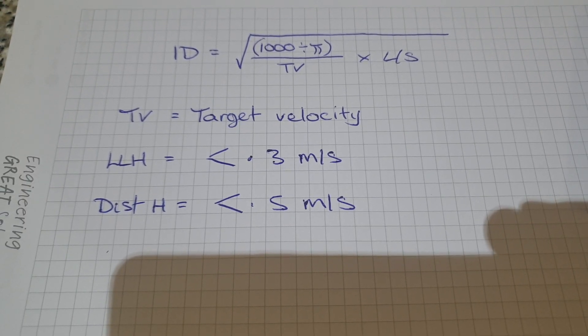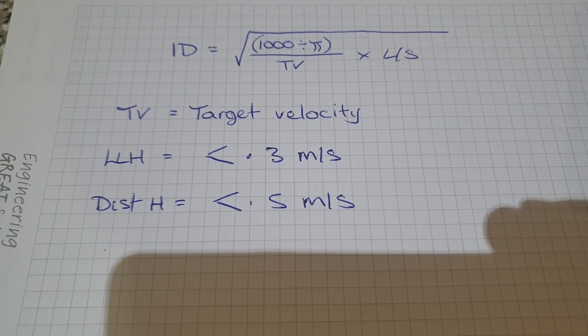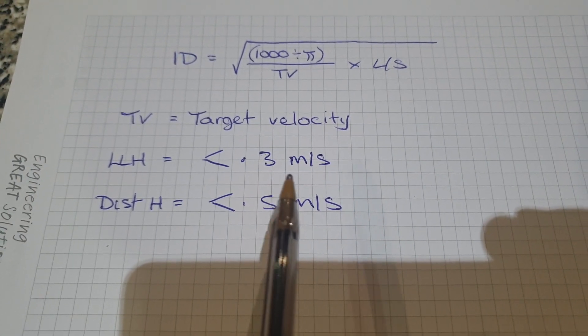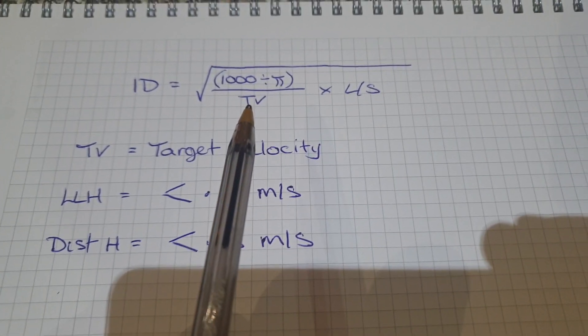So if you want to design a low-loss header, for example a tubed header, you know what your target velocity is. That's 0.3 meters per second. You can put the figures into this formula.